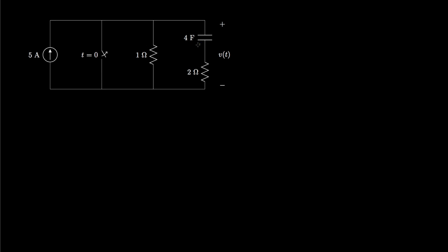Let's take a look at a circuit that has a 4-farad capacitor in series with a 2-ohm resistor, and that combination is in parallel with a 1-ohm resistor. We have a 5-amp current source, and then we have a short that is switched. So before T equals 0, we have a short here, and after T equals 0, we open that up.